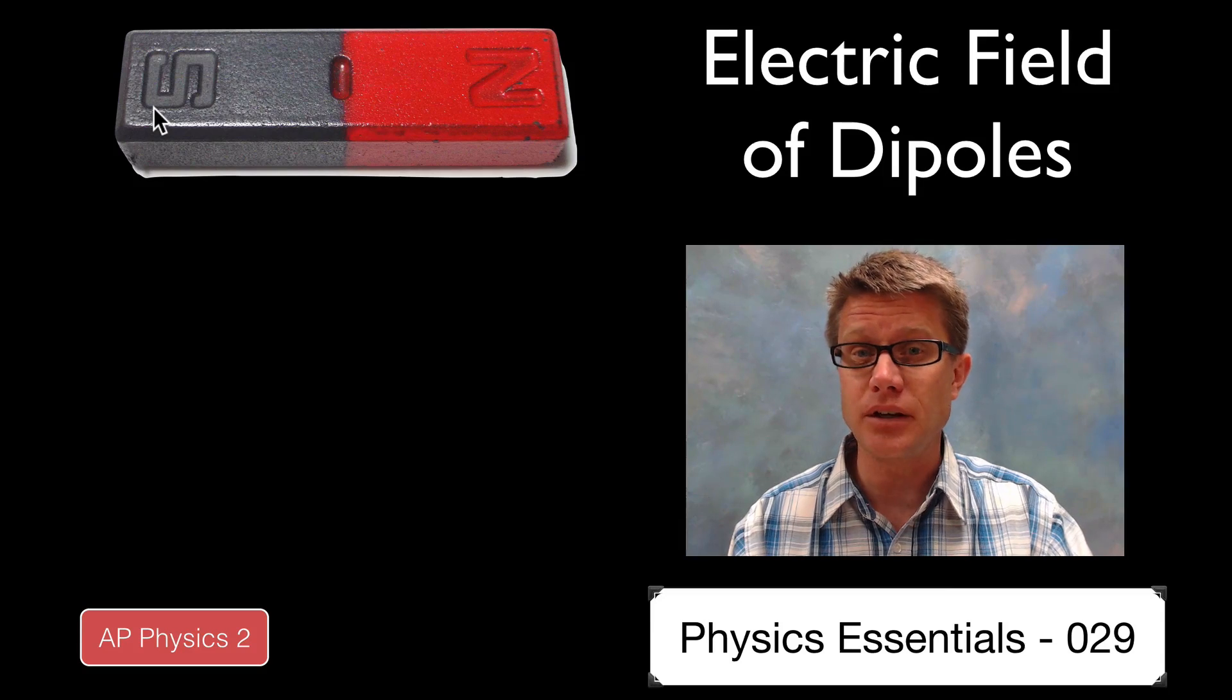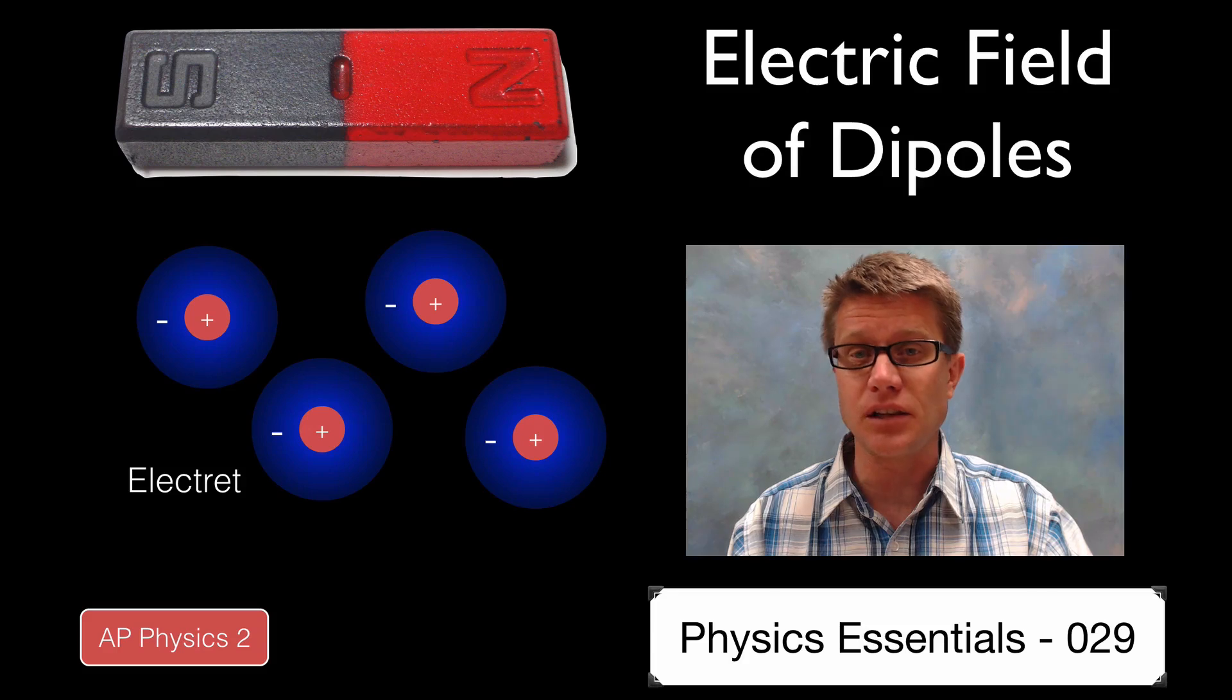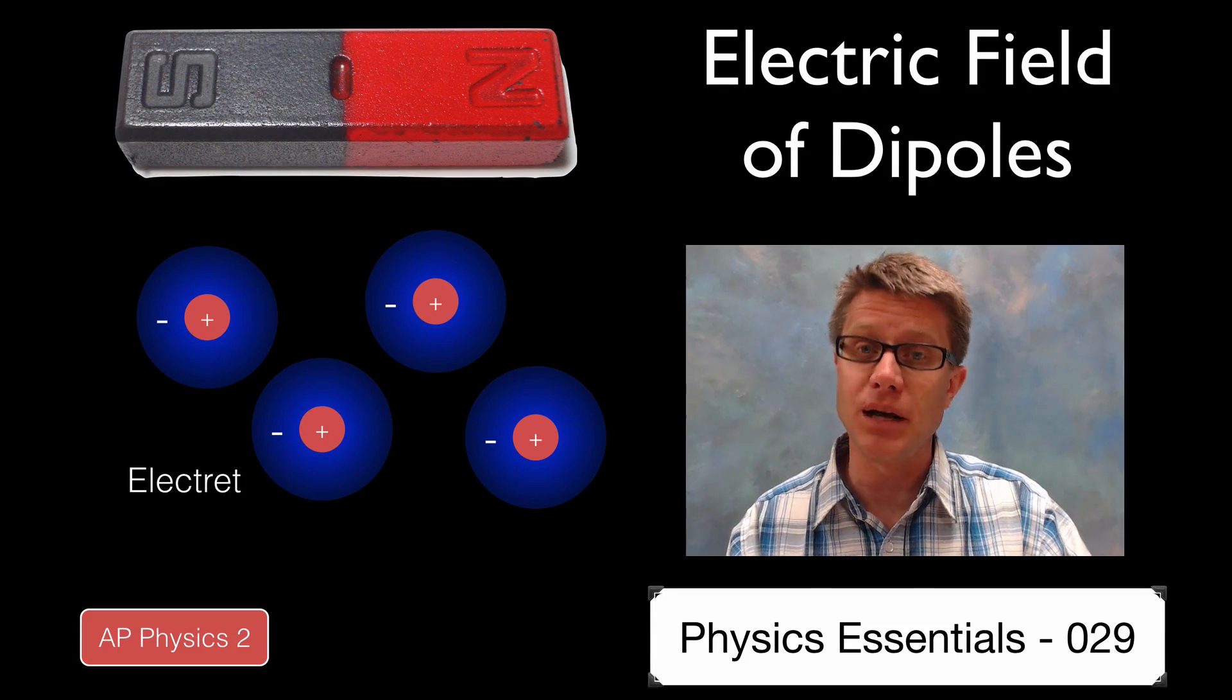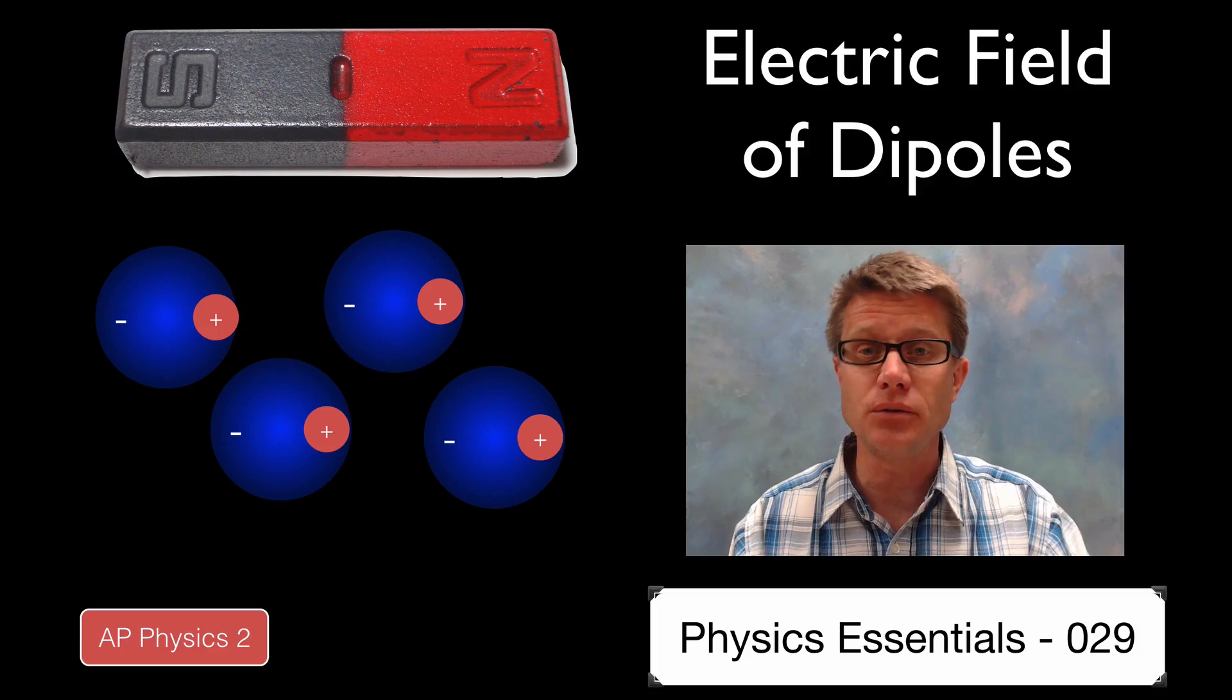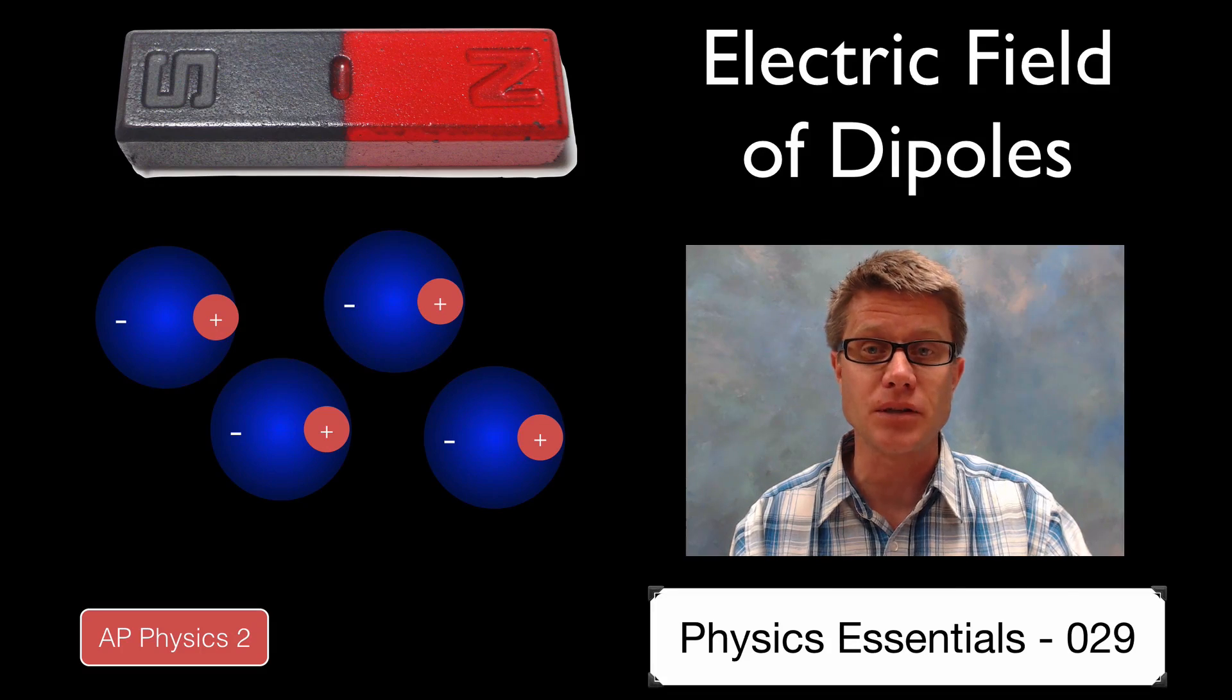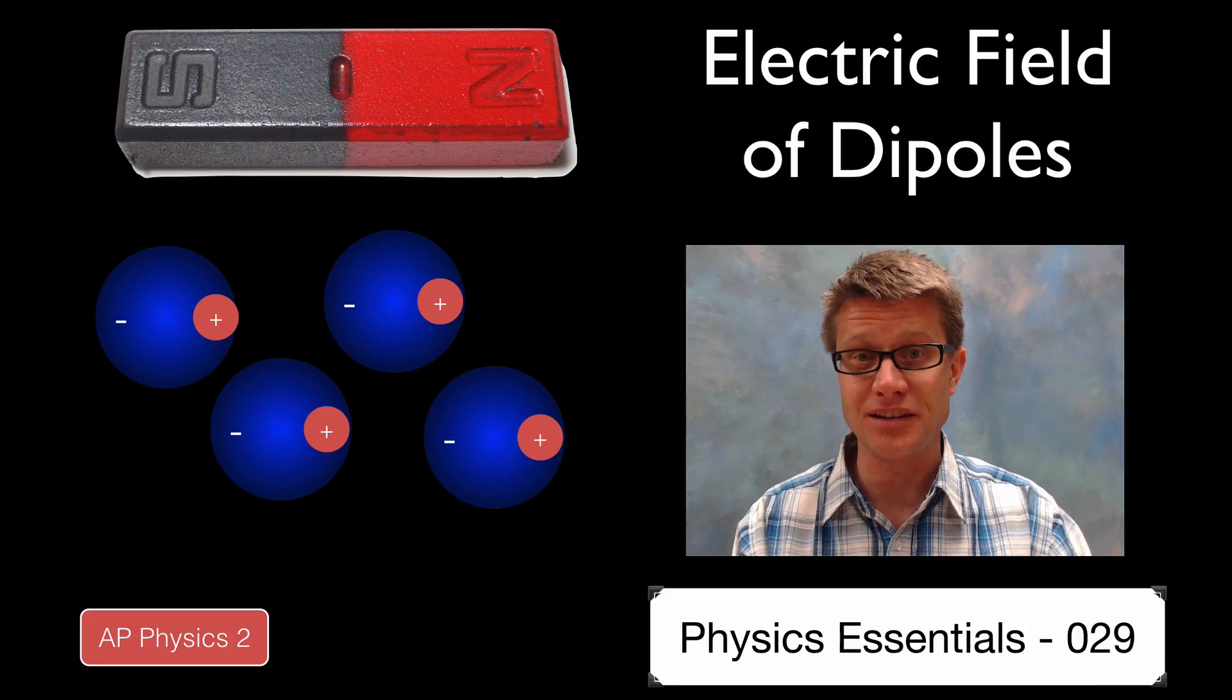It's called an electret and it was developed in the 1960s. What scientists do is they take something that's an insulator, generally like wax, melt it so it's a liquid, and then apply high voltage to it. This will polarize those atoms, and then as it becomes a solid you have a solid permanent electret.